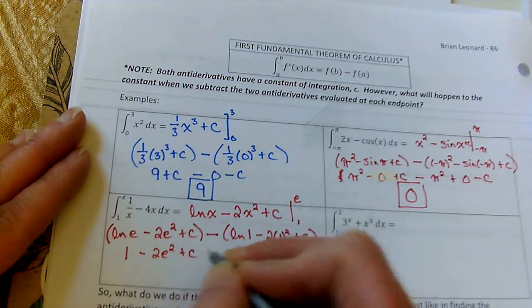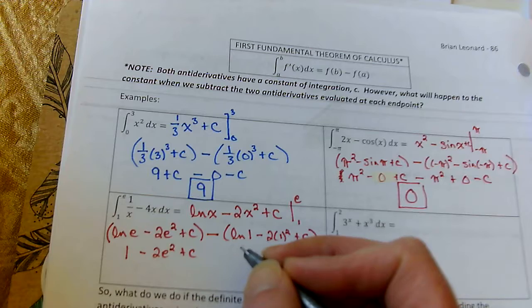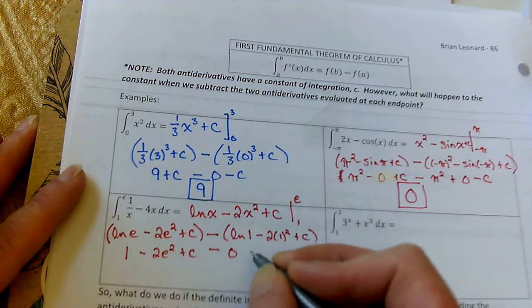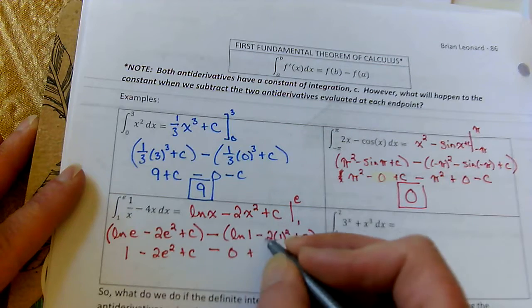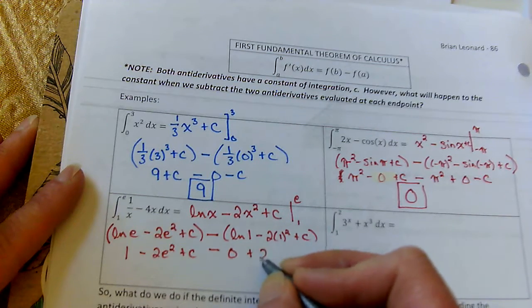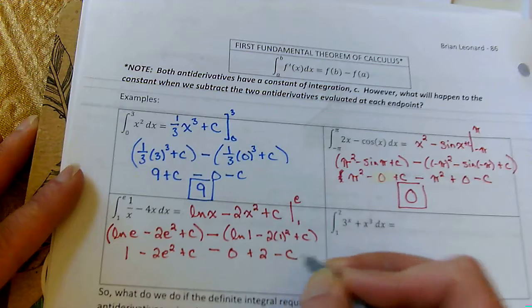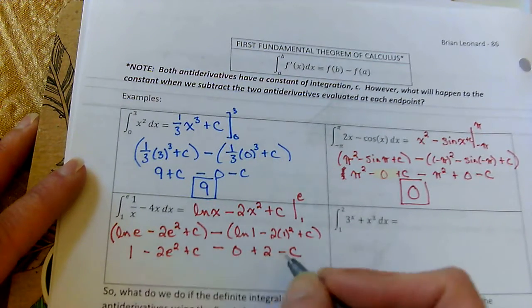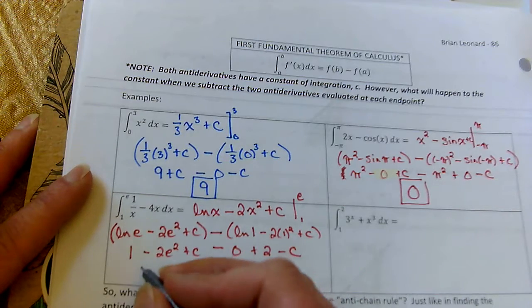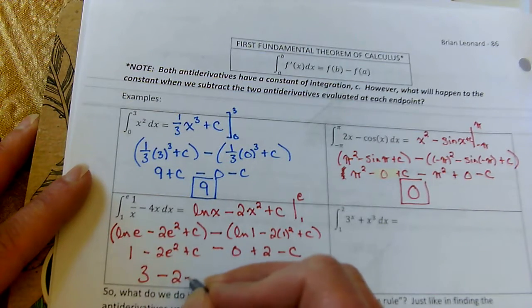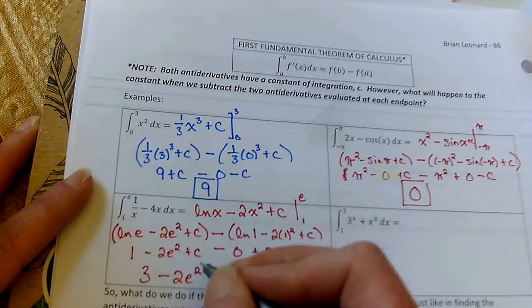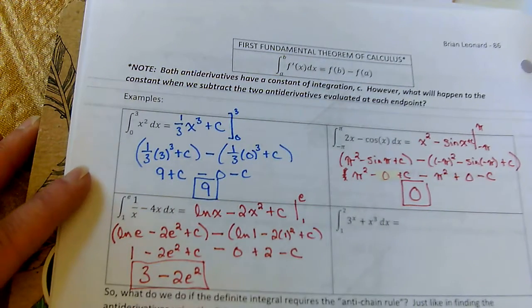So, what is natural log of e? Well, that's... well, that's zero. And then I'd have minus negative, so it's plus 2 times 1 squared minus c. So, we have a 1 plus a 2. That's 3 minus 2e squared. And what happens to the c's? Every time the c's are going to cancel out.